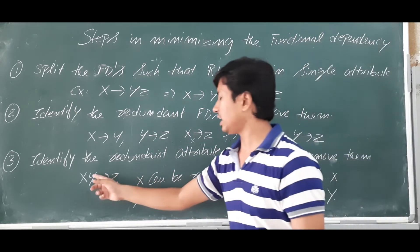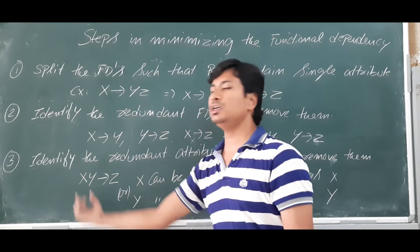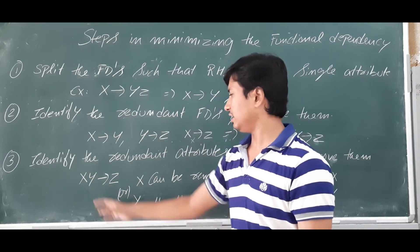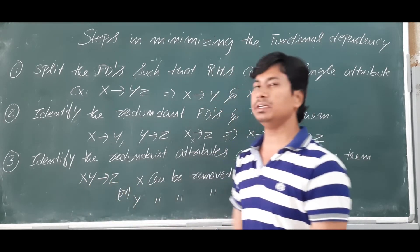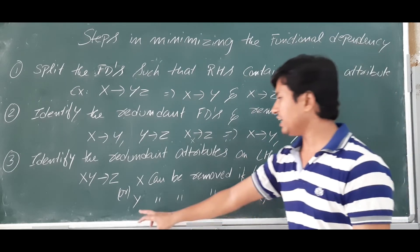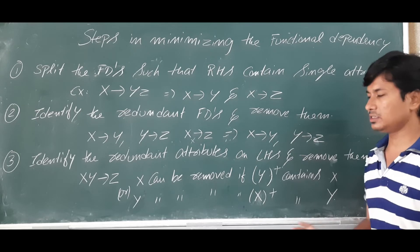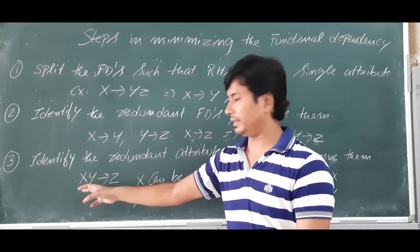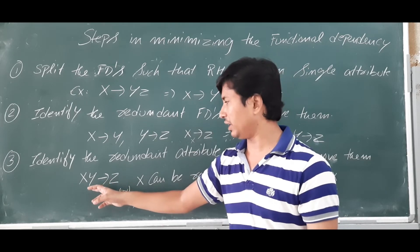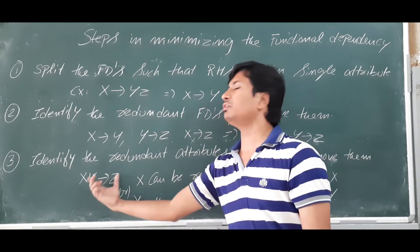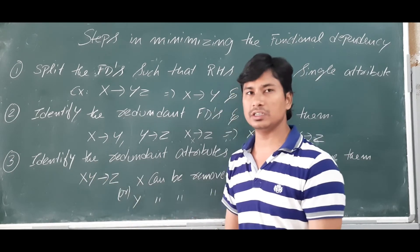Similarly, Y can be removed if the closure of X contains Y. So we will try to remove X if possible; if not, we will try to remove Y. If both cannot be removed, we keep XY determines Z as it is, because we have no other option.